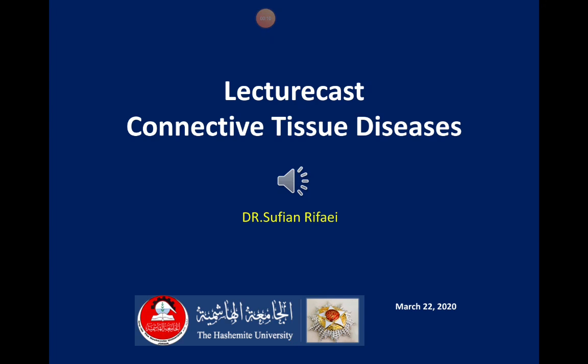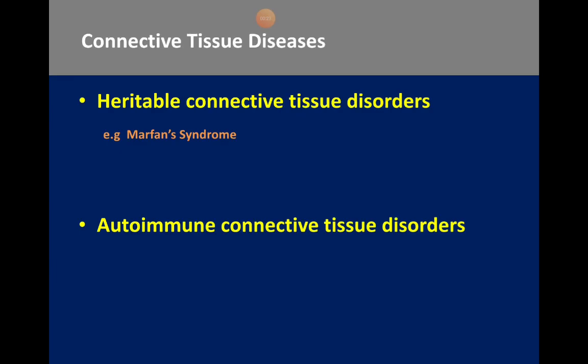Today's lecture is on connective tissue diseases — a very important topic with significant rates of morbidity and mortality. This topic includes disorders of a multi-system nature, wherein multiple vital organs can be involved, such as the kidney as happens in lupus nephritis, or lungs and interstitial lung diseases related to these connective tissue disorders. It is very important not to get the term heritable connective tissue disorders confused with autoimmune connective tissue disorders. A big example of a heritable connective tissue disorder is Marfan syndrome.